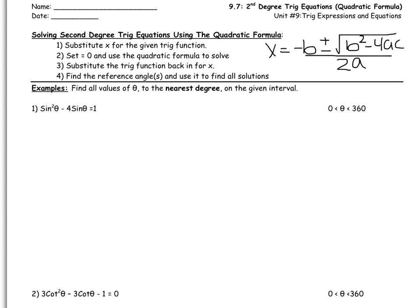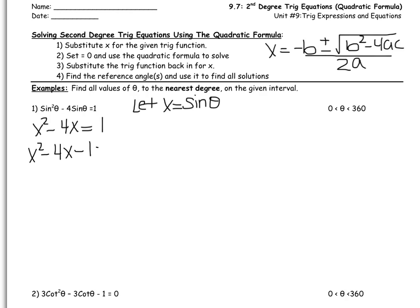So for example number one, we can do it like we normally would. We're going to let x equal the trig function, which is sine of theta, and we're going to plug in. So x squared minus 4x equals 1. We have to get this equation equal to 0, so this 1 needs to be brought to the left-hand side: x squared minus 4x minus 1 equals 0. Now the reason we need to use the quadratic formula is because this is non-factorable — I can't find any two numbers that multiply to negative 1 and add to negative 4. So this is a non-factorable trinomial.